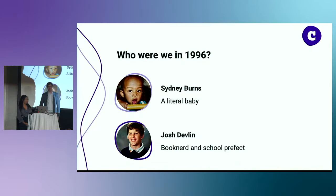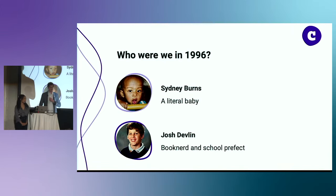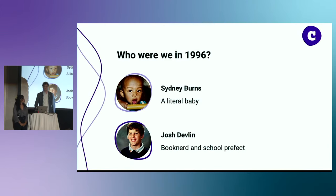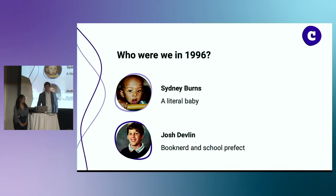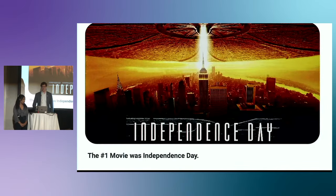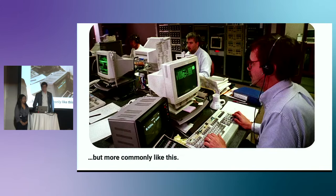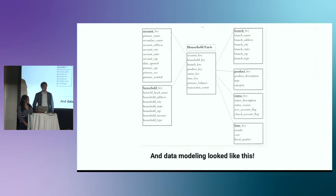We'll start with us. I didn't know Sydney in 1996, but I suspect that she may have been focusing on learning to walk. I am wearing my school prefect badge. The number one song in 1996 was the Macarena. Number one movie was Independence Day. And computers look like this — but more often look like this. And data modeling looked like this. So you might be asking yourself, why does data modeling still look the same in 2022?